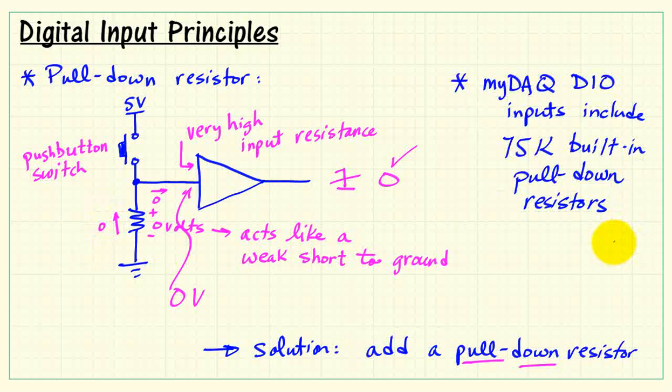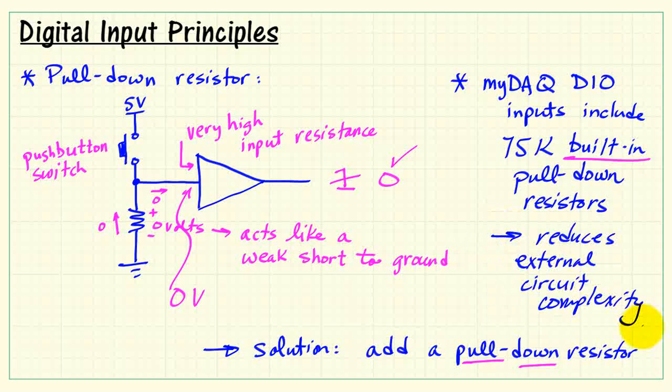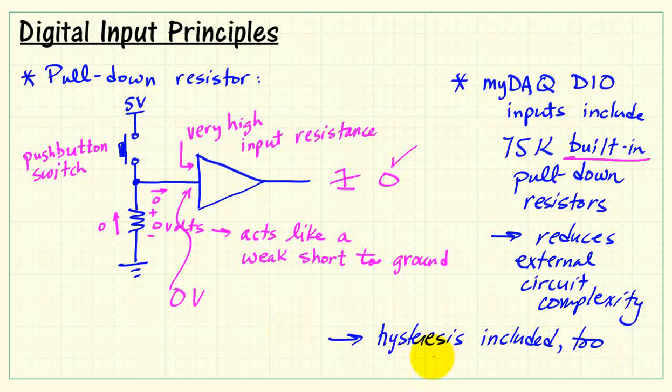The MIDAC DIO inputs include this pull-down resistor as a 75K device. The pull-down resistor reduces external circuit complexity, especially when you're using switches on the inputs. And lastly, the hysteresis that I was mentioning earlier, that's included too.